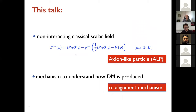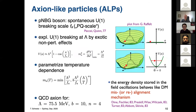I will adopt the classical scalar field hypothesis and call these axion-like particles. In this scenario, we have a mechanism to understand how dark matter is produced, which is the misalignment mechanism. So this is the motivation for this dark matter candidate. Let me briefly introduce the axion-like particles, ALPs. The main idea is that we assume there is a global U(1) symmetry which is spontaneously broken at the high energy scale FA, called the Peccei-Quinn scale.